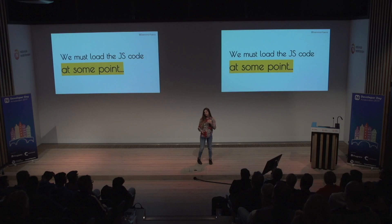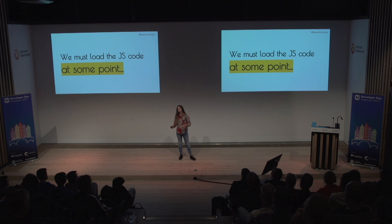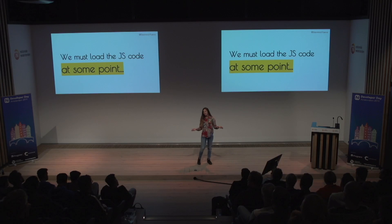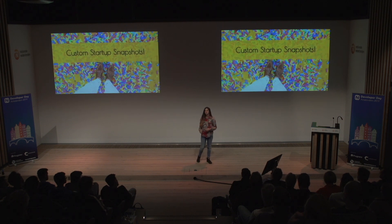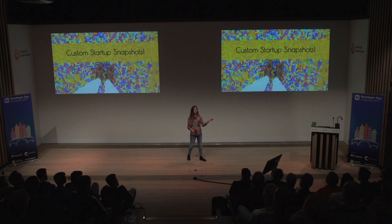By default, parsing and compiling is done at runtime. But what if we could do that at build time, so we can skip that whole part when we start the app? There is a way to do that with V8. The feature is called custom startup snapshots or custom heap snapshots. An important note: it's only available for Android because we use V8 for Android and a different JavaScript engine for iOS.